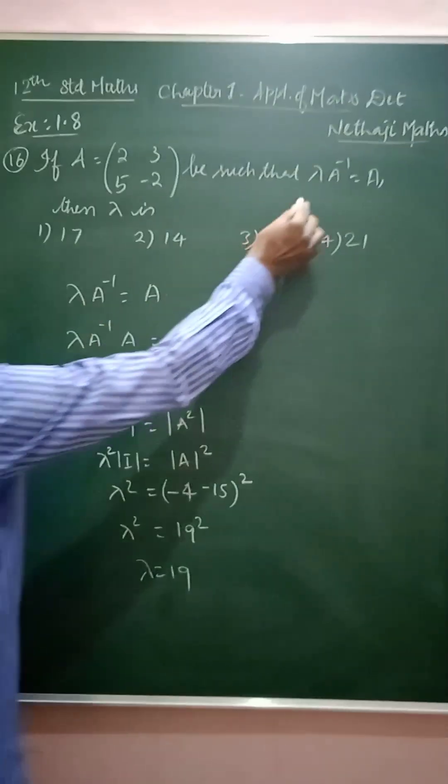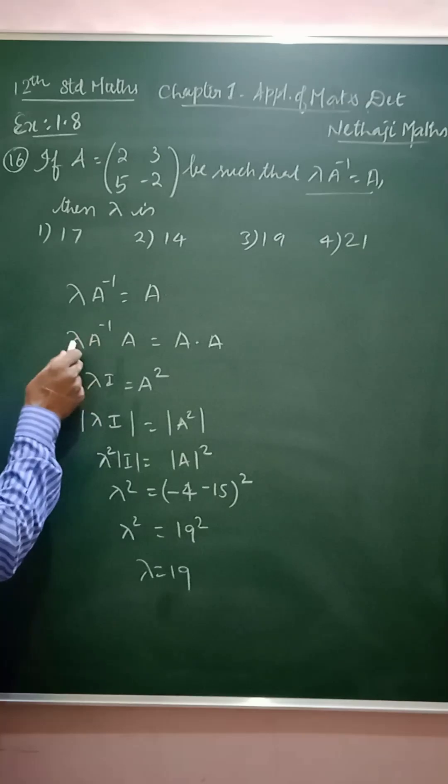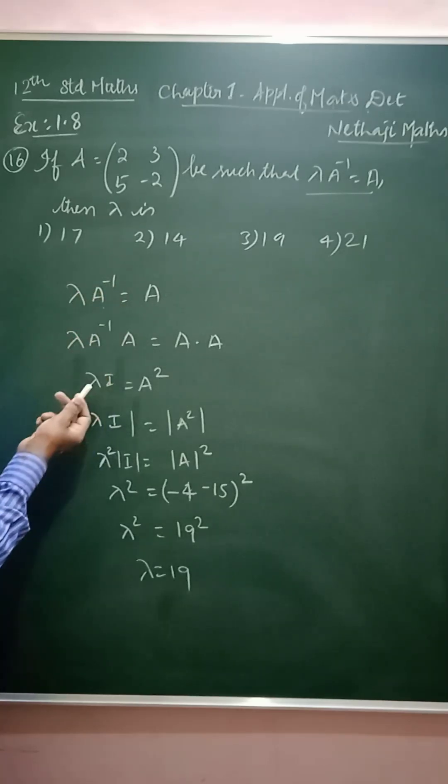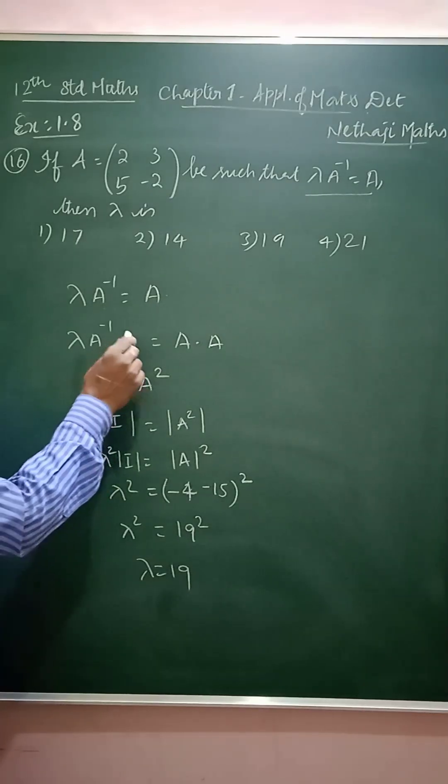Lambda into A inverse is equal to A. This is the given condition to you. Here we have lambda value. So, when A inverse remove, I am going to multiply, post multiply the A on both sides.